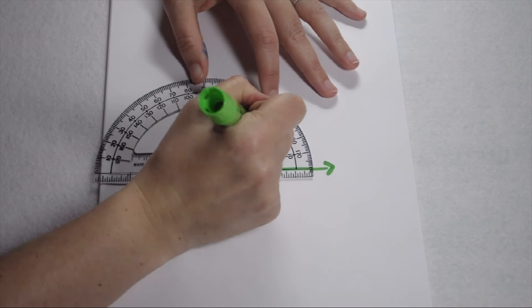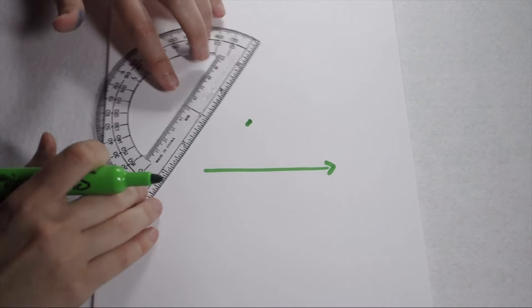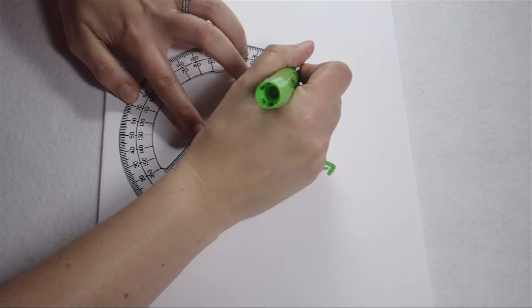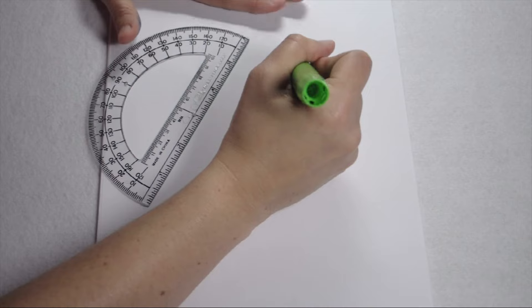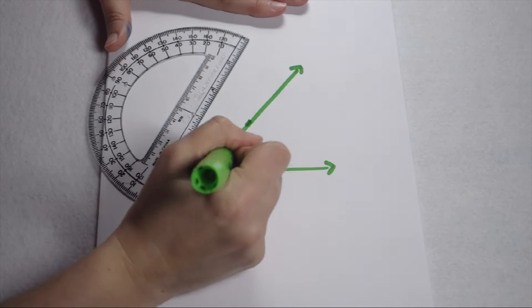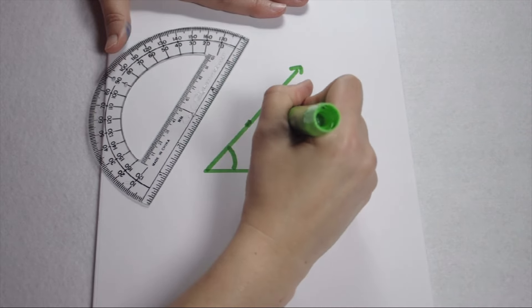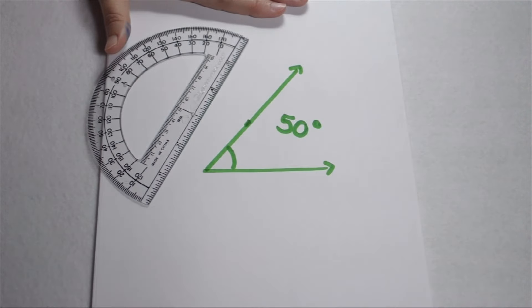So we're going to make a mark by that 50 degrees. Now, we can pick up our protractor and use that mark to connect to our vertex to create the other ray of our angle. We're going to go ahead and label an arc on the inside to show which way we turned, and now we know that we have our 50 degree angle.